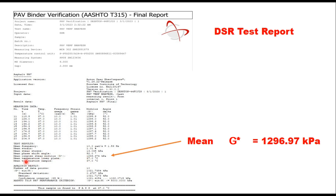The report shows that the mean complex shear modulus G* is 1296.97 kPa, and the mean value of delta is 52 degrees. G* sine delta is calculated as 1021.74 kPa. If this value is less than the limiting value of 5000 kPa, the test is stopped. Otherwise, the software automatically changes the temperature until G* sine delta falls below 5000 kPa.